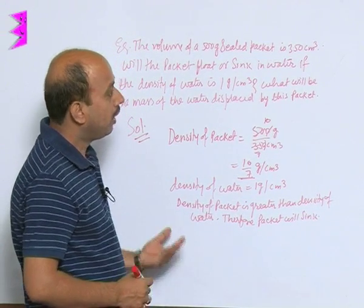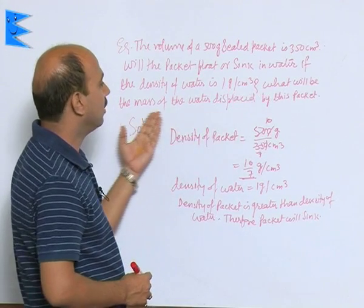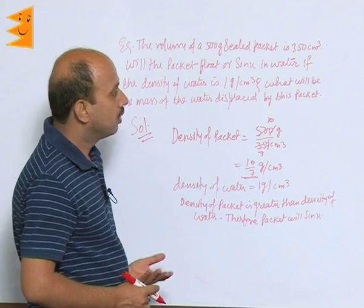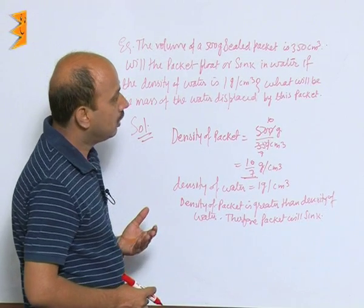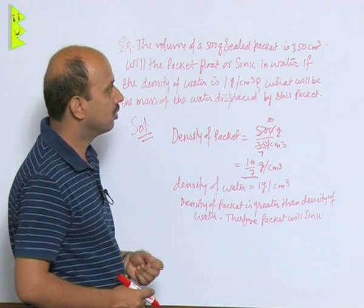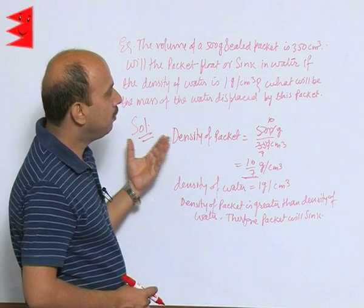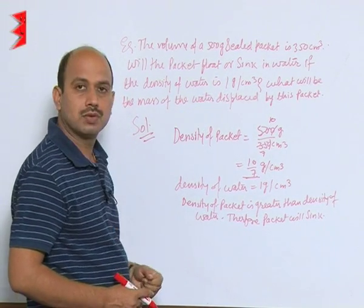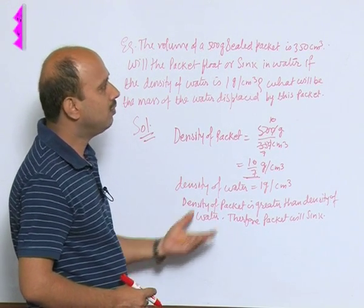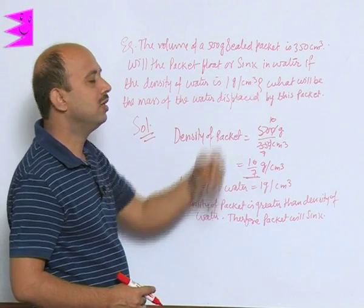Now you have to find out what will be the mass of the water displaced. As I have told you, the weight of the liquid displaced is equal to buoyant force. Simply the density is 1, so whatever the mass of the liquid will be displaced, that will be equal to just the volume.